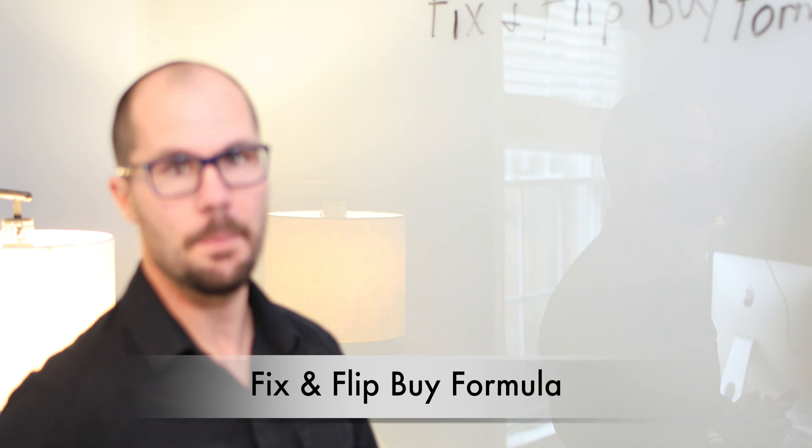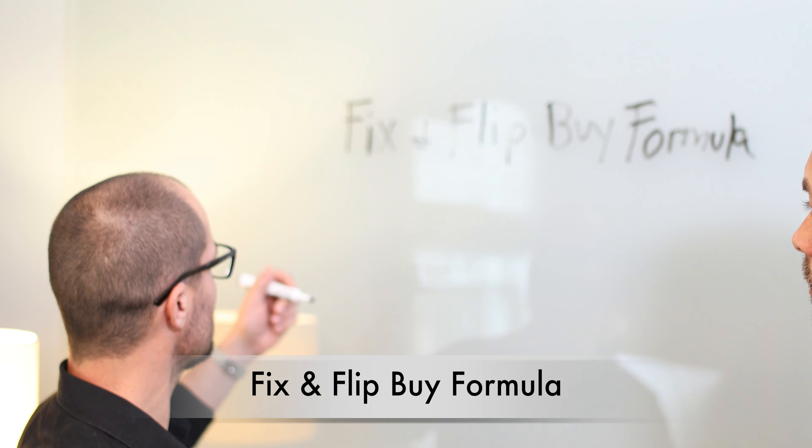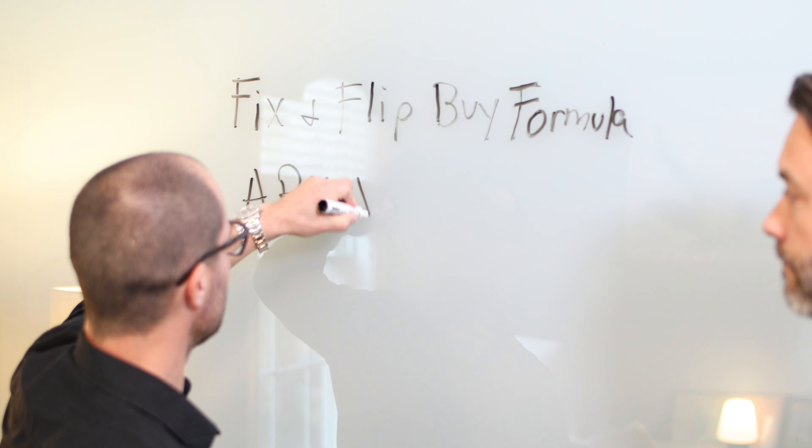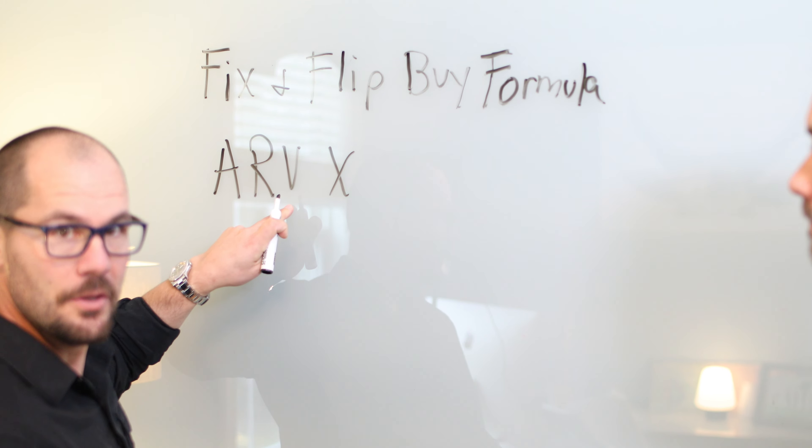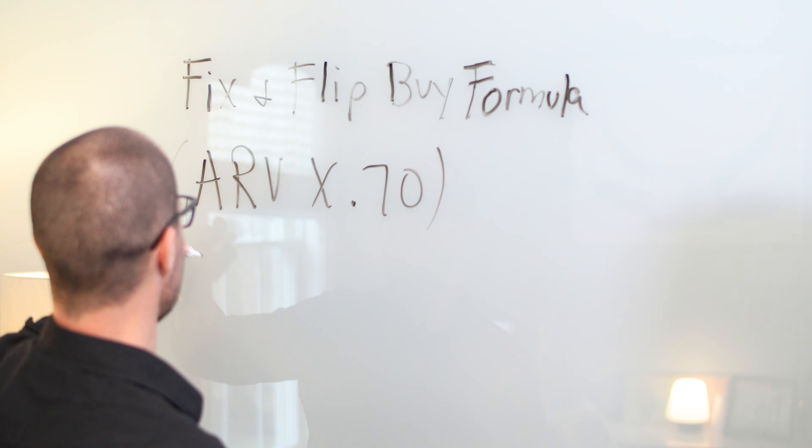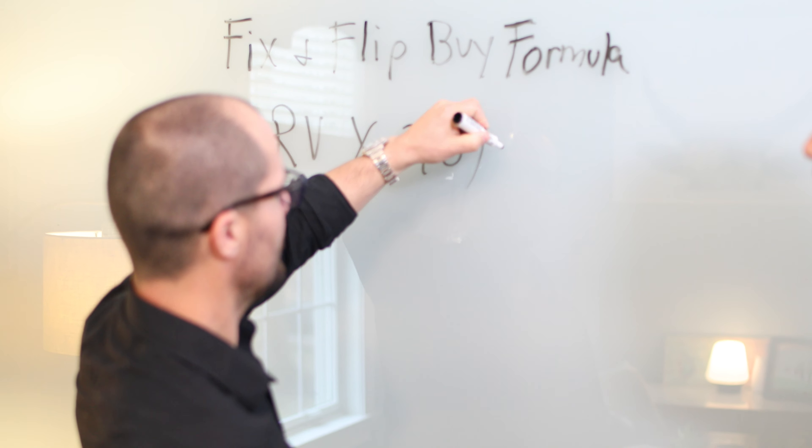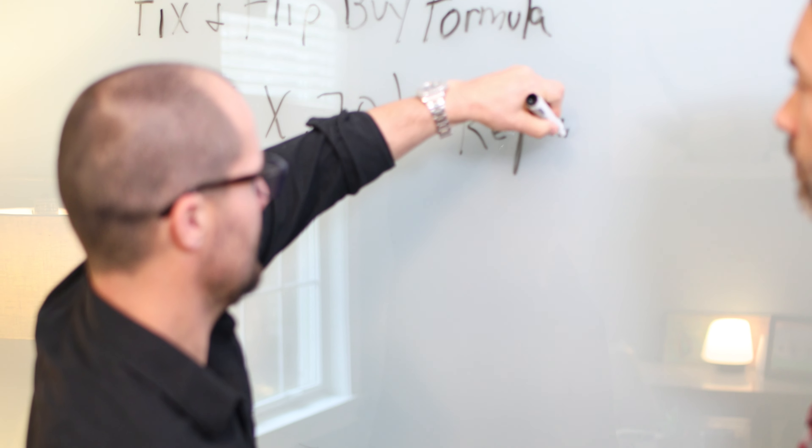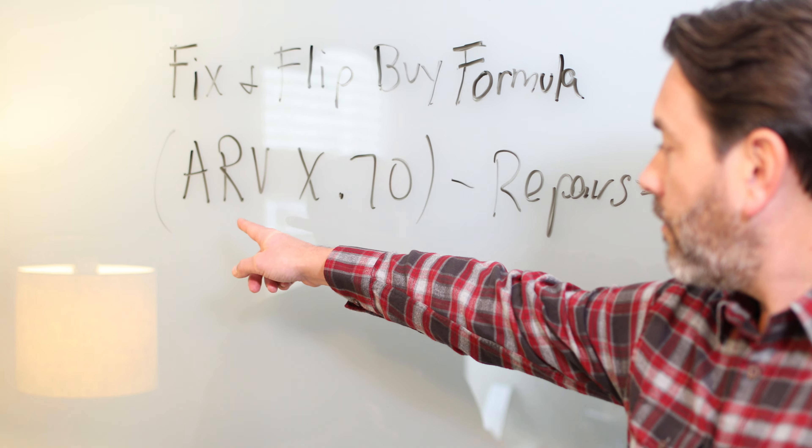So what's great is we have our fix and flip buy formula. And the way this looks is I'll put some stuff up here. We have our ARV, which stands for after repair value. And then what we're going to do is we're going to multiply that by 70% or 0.70. Then we're going to subtract the repairs. And then that equals our buy. So that's our formula. That's the whole formula right here.